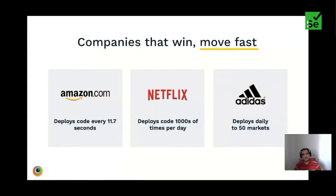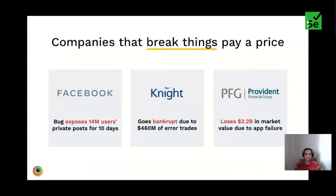Companies that win all have one thing in common: they move fast. Trailblazers like Amazon and Netflix deploy to production thousands of times per day. Companies like Adidas have become software companies in their own right — Adidas deploys to 50 global markets daily. Speed matters, but quality matters just as much. Companies that break things pay a heavy price.